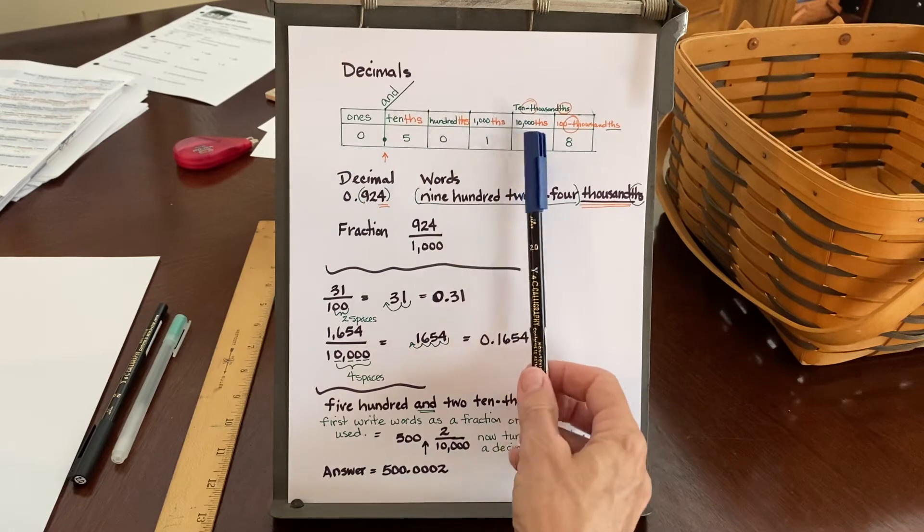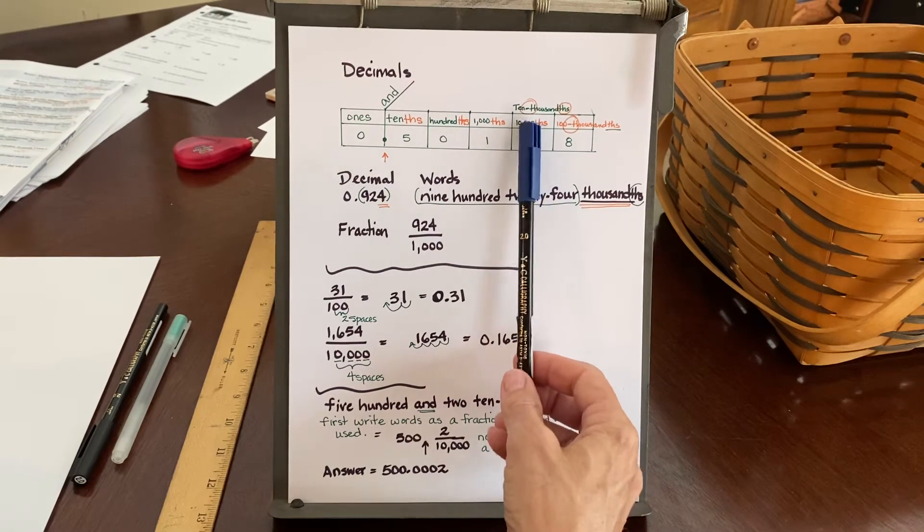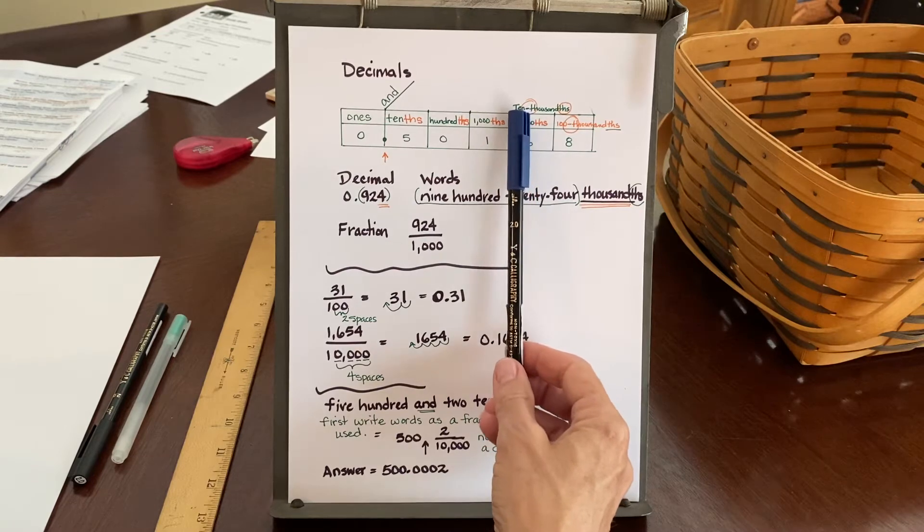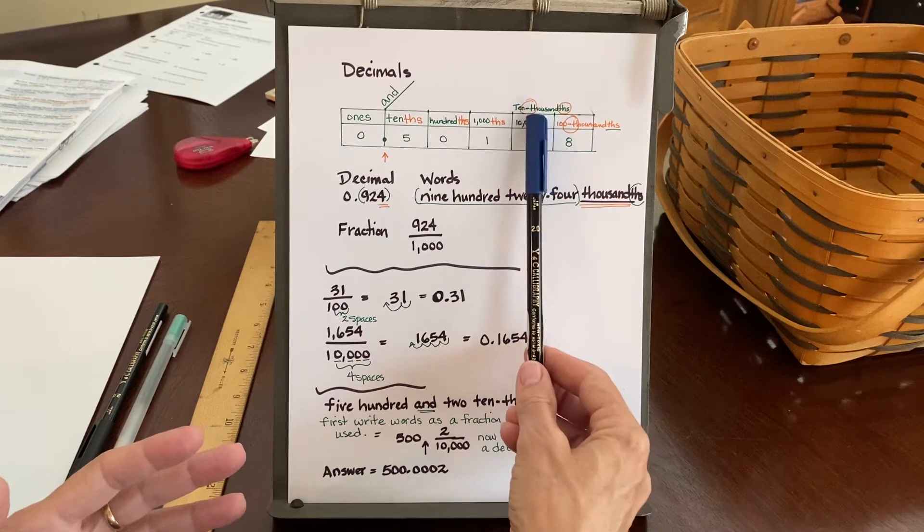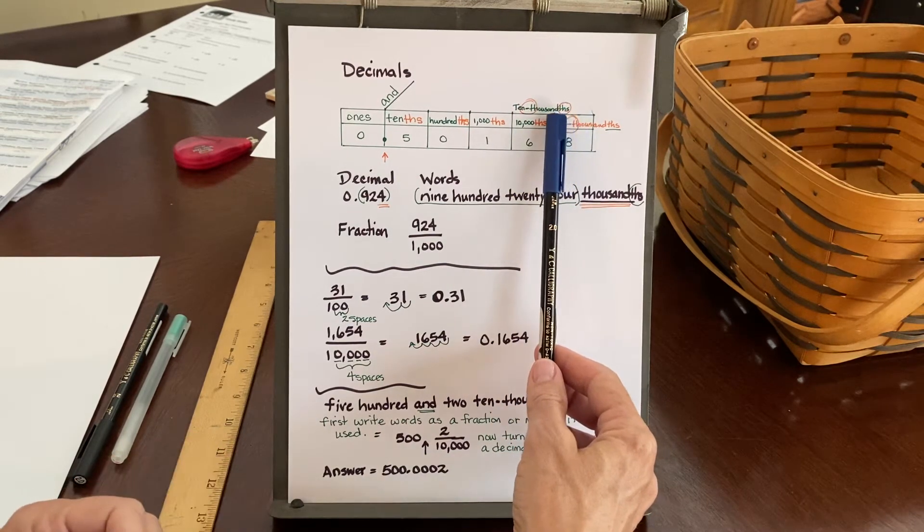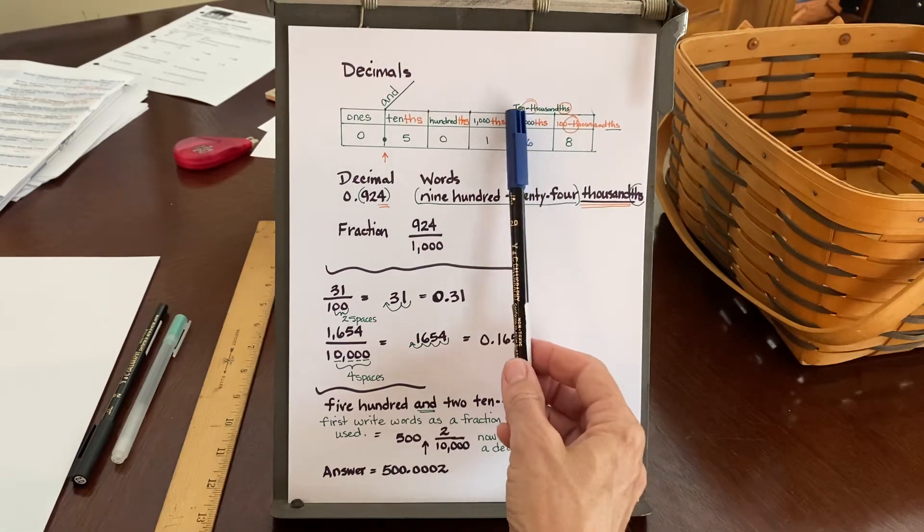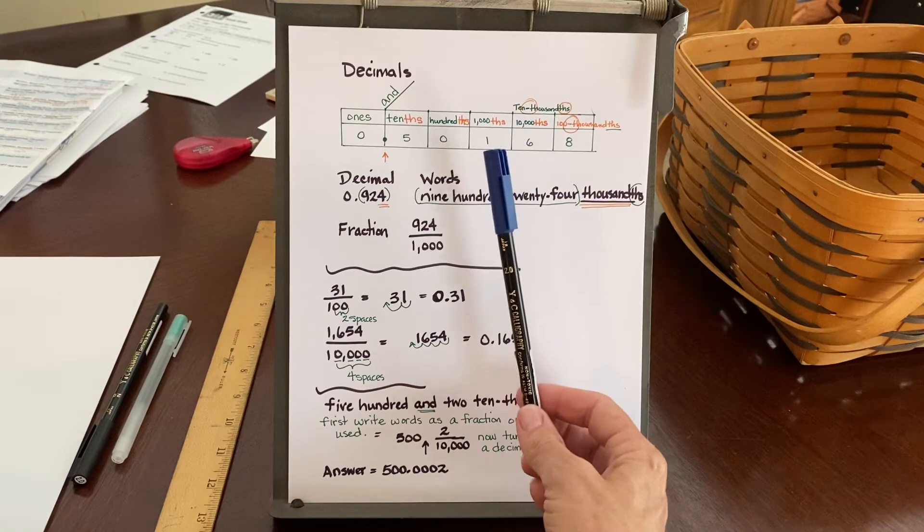The other thing that's so important, when we get to like the ten thousandths, if you see it written in words, the word ten is spelled out, T-E-N. Then you have a hyphen. Then you have the word thousand with a THS stuck on the end of that word. So the hyphenated word tells you that you're in the ten thousandths column.